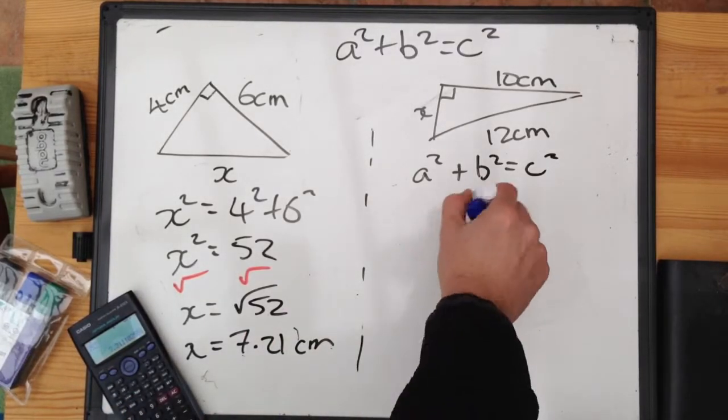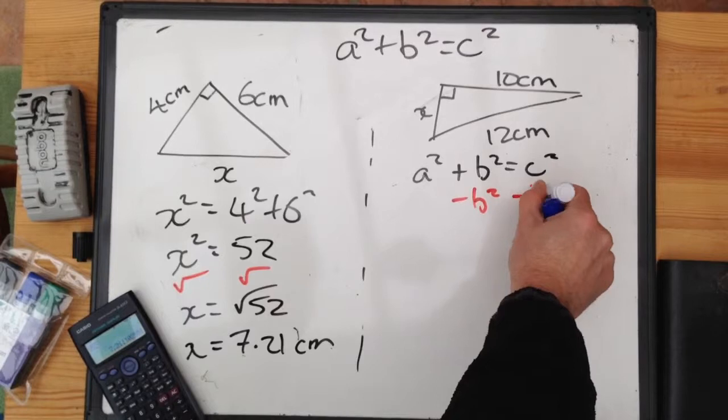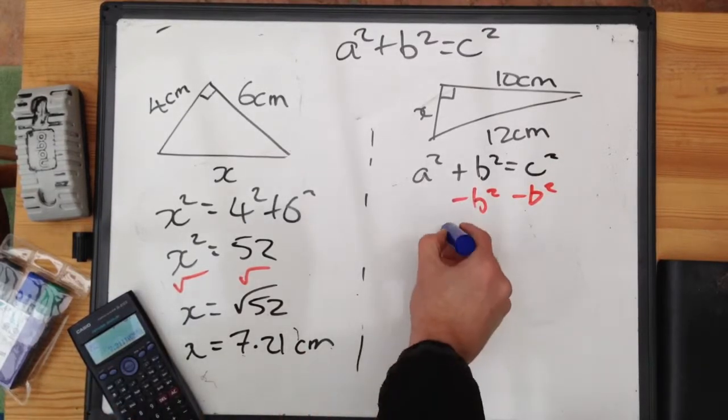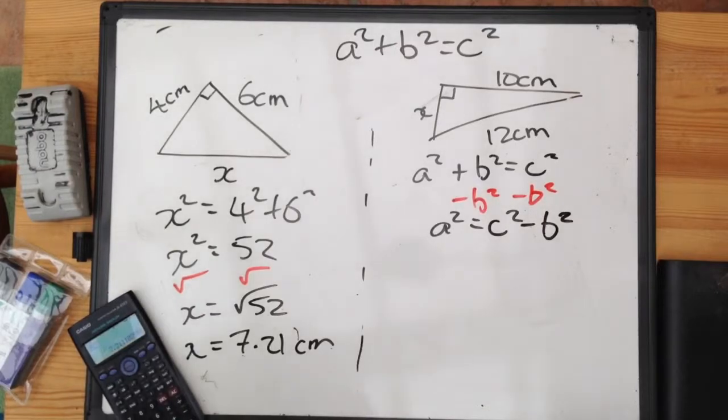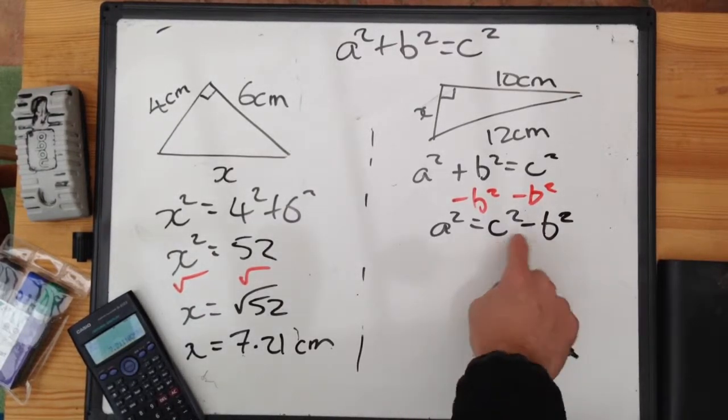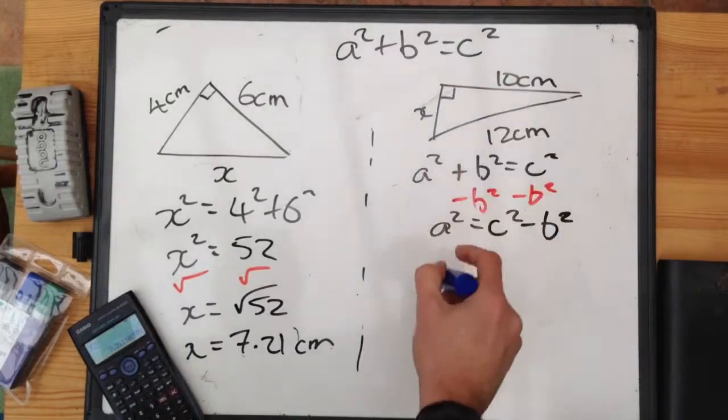Probably the easiest way to do it is to remove the B squared by subtraction. And we end up with A squared is equal to C squared minus B squared. In other words, if we're trying to find one of the shorter sides, we subtract the squares. Following that rule, then,